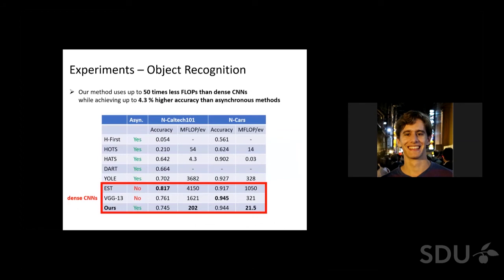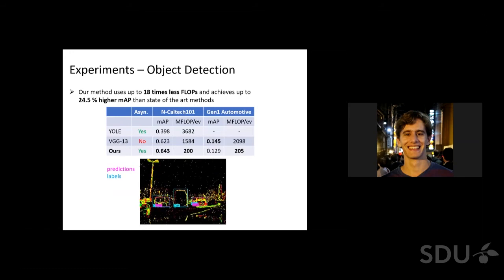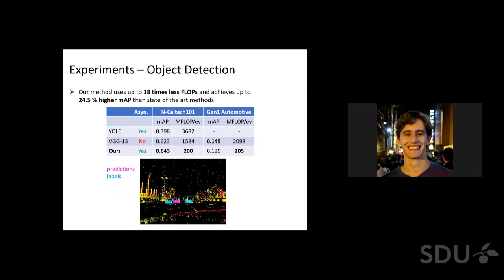In this table we compare different methods for object recognition. We see that compared to dense CNNs, here highlighted in the red box, our method uses up to 50 times less FLOPs compared to the state-of-the-art learning methods. In addition, compared to asynchronous learning methods, our method achieves up to 4.3 percent higher performance. Similarly for object detection, we find that our method uses up to 18 times less computation while outperforming state-of-the-art methods by up to 24.5 percent.